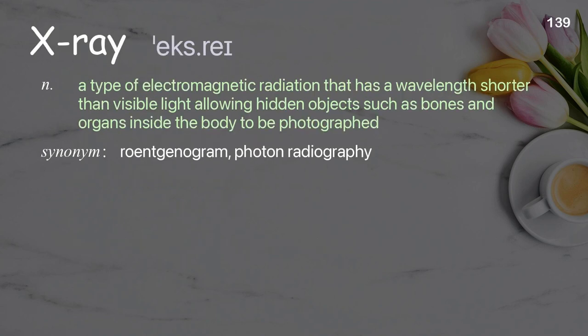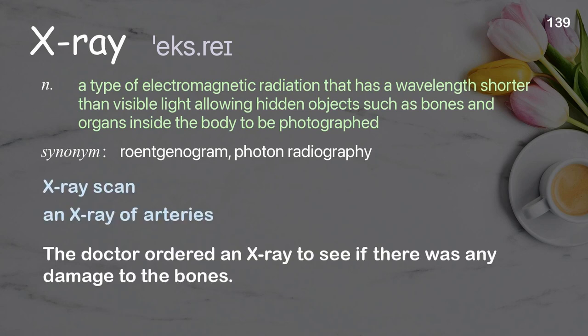X-ray: a type of electromagnetic radiation with a wavelength shorter than visible light, allowing hidden objects such as bones and organs inside the body to be photographed. Examples: X-ray scan, an X-ray of arteries. The doctor ordered an X-ray to see if there was any damage to the bones.